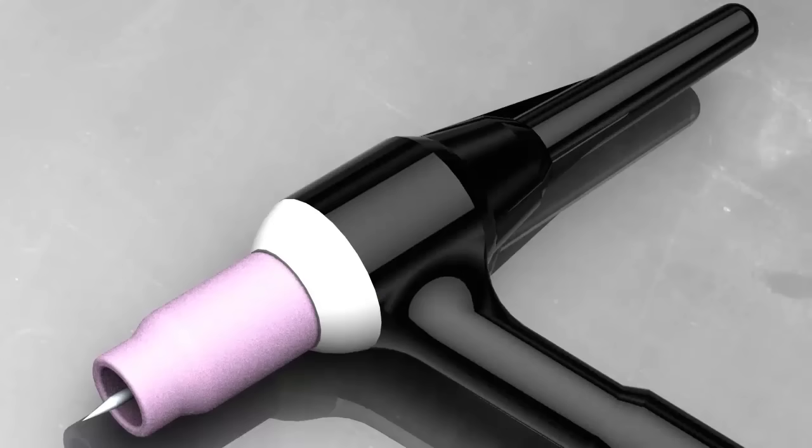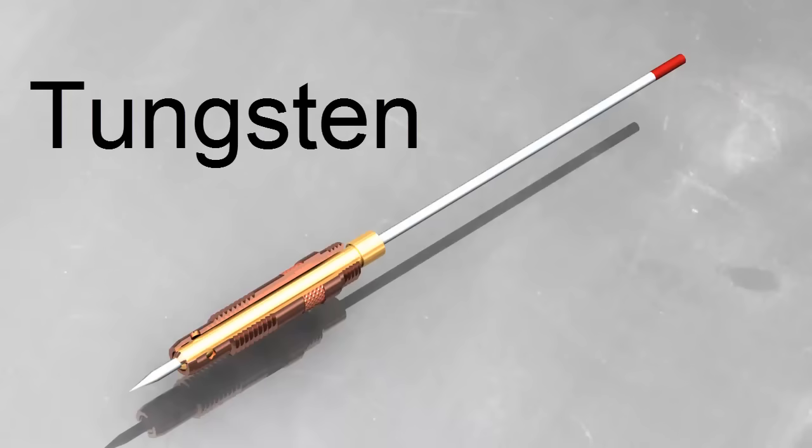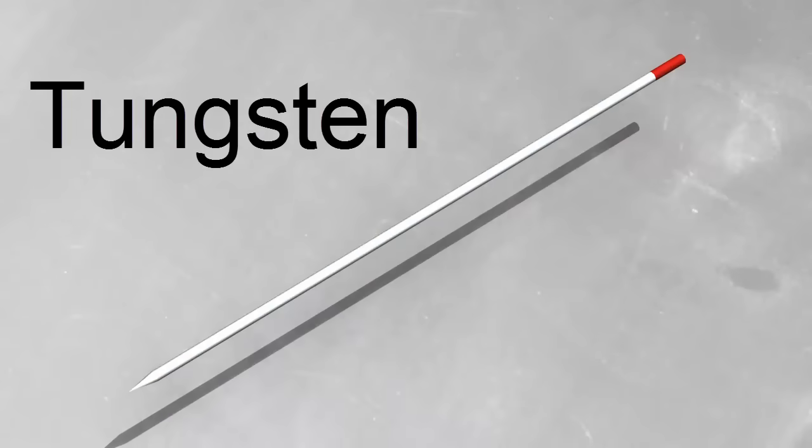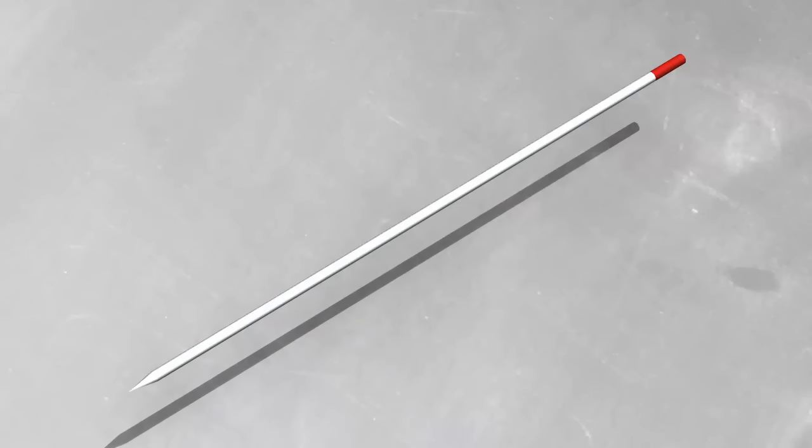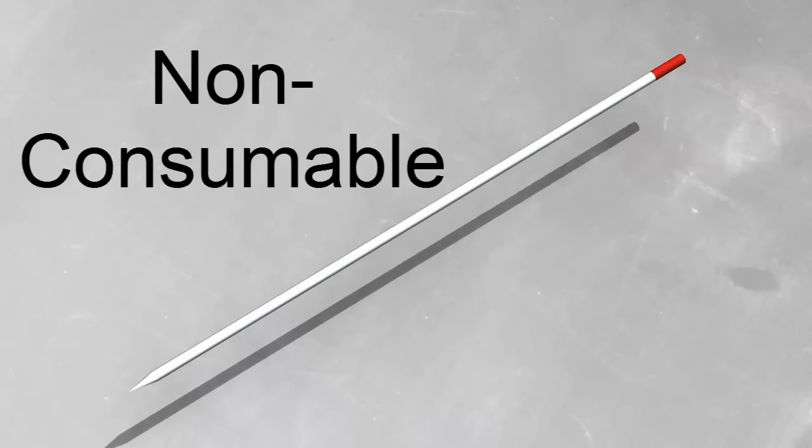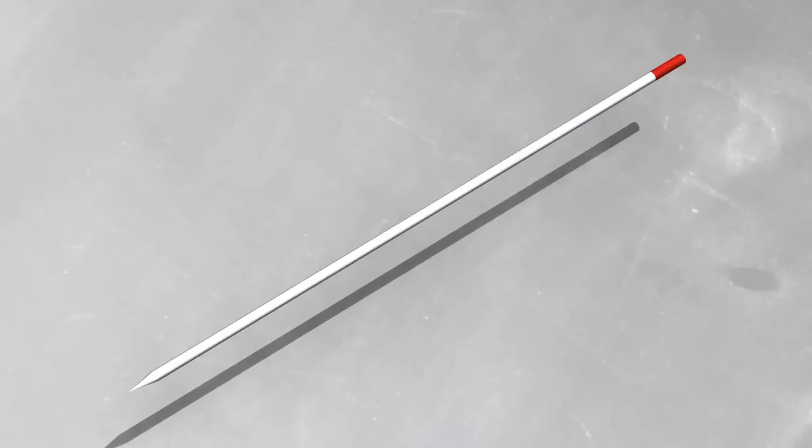TIG welding uses a tungsten electrode. Tungsten has an extremely high melting point. When you TIG weld, the electrode gets hot, but it doesn't melt. We say that it's a non-consumable electrode. That doesn't mean it lasts forever. That just means that it doesn't melt and become part of the weld.